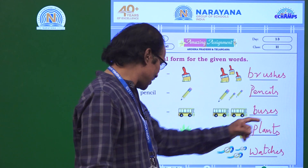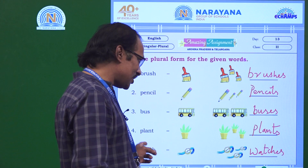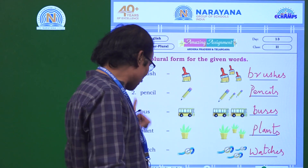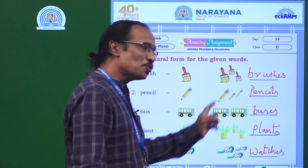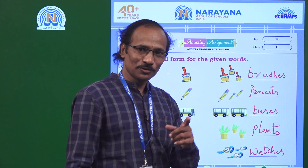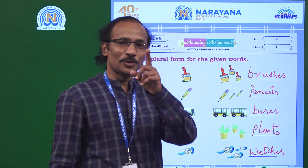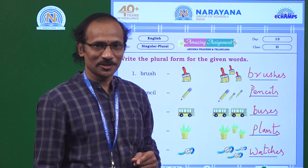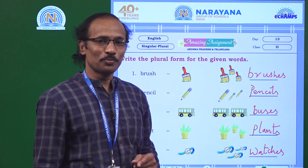Let us have a recap: brush → brushes, pencil → pencils, bus → buses, plant → plants, watch → watches. This is how plurals are formed for singular words.